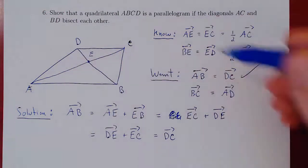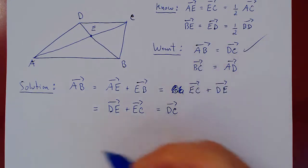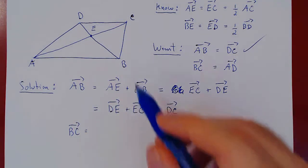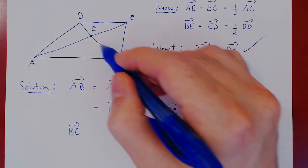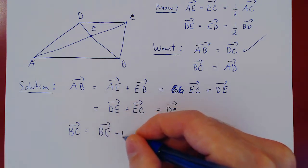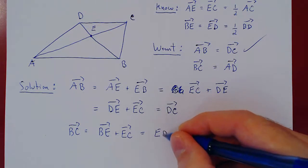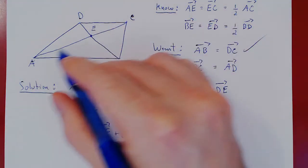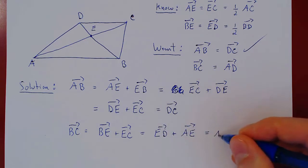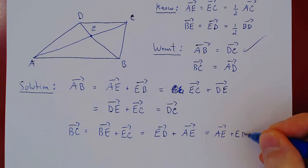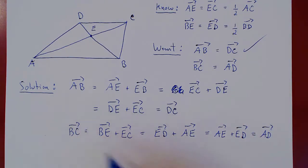Because the picture is symmetric, proving BC equals AD is quite similar. Vector BC equals vector BE plus EC. By assumption, vector BE equals vector ED, and vector EC equals vector AE. So BC equals ED plus AE, which by commutativity equals AE plus ED, giving vector AD. Therefore vector BC equals vector AD.